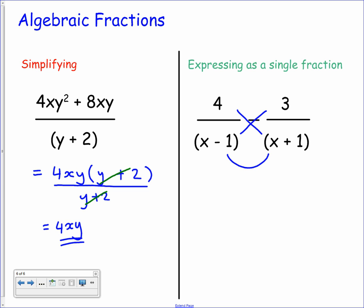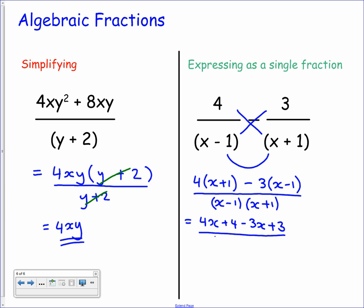So if we have 4 lots of x plus 1 minus 3 lots of x minus 1, that becomes our numerator. On the denominator we have x minus 1 times x plus 1. Now we need to do a wee bit of tidying up here. So expand out the brackets. That gives us 4x plus 4 minus 3x plus 3, which is now a double negative. Still all over x minus 1, x plus 1.